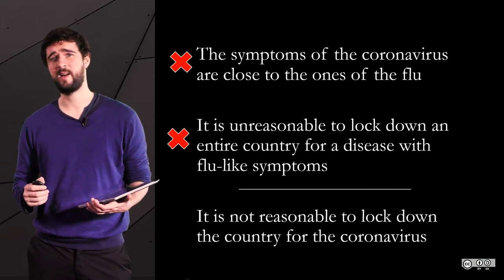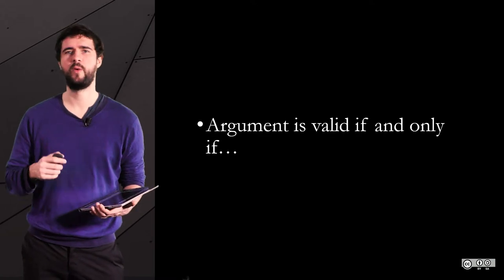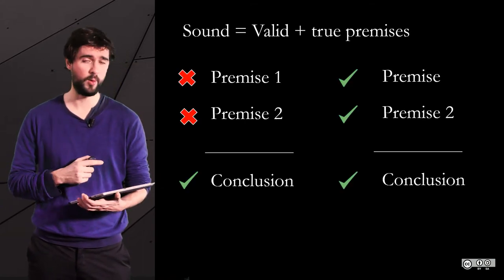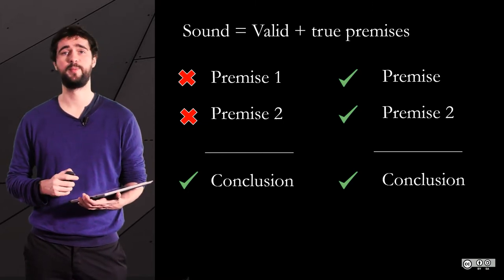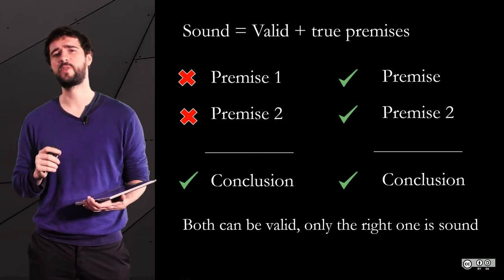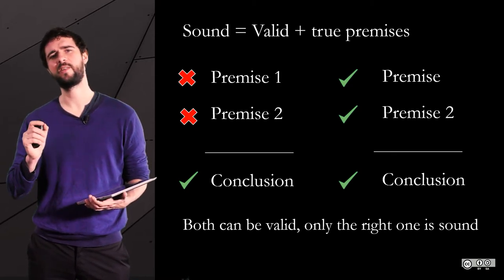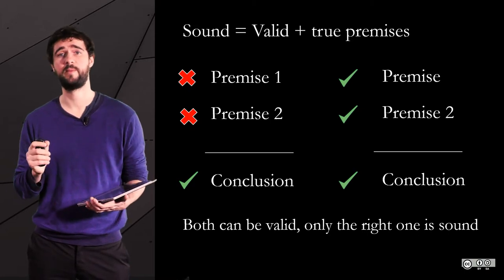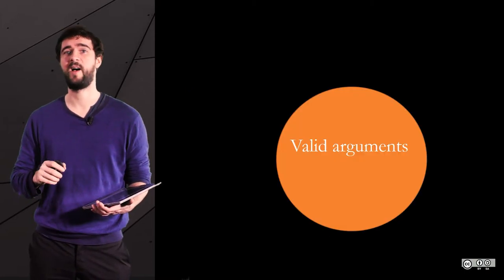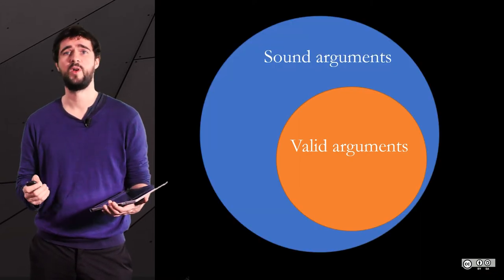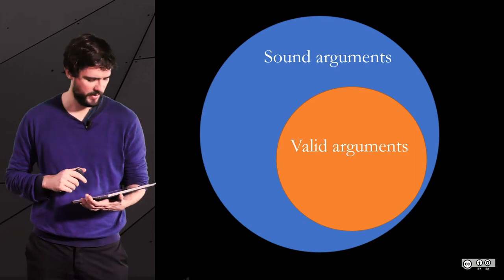To sum up, an argument is sound if on the one hand it is valid, and if on the other hand the premises are true. Looking at two arguments: on the left the premises are false, on the right they are true. Both arguments are valid because the conclusion derives from the premises, but only the right argument is sound. In other words, valid arguments are a subcategory of sound arguments, which is the reason why I represented them that way.